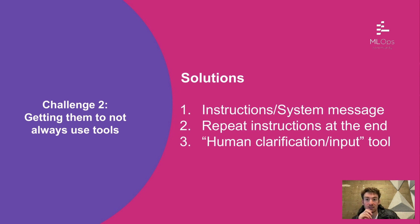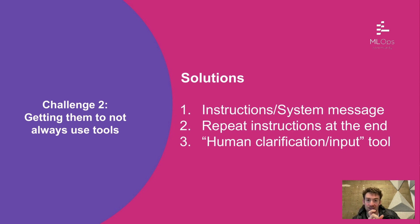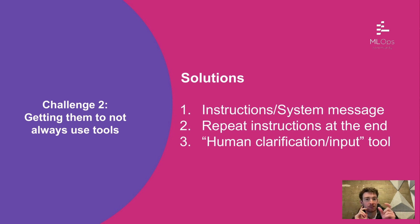The second challenge is that they don't always need to use tools. Again, telling them that in the system message and repeating the instructions at the end helps. A third interesting technique is adding a tool which itself is basically just responding to the user. We've seen this be really helpful because the instructions sometimes aren't enough by themselves — so explicitly having a tool, quote unquote, that it can call to get a response to the user has been really helpful.